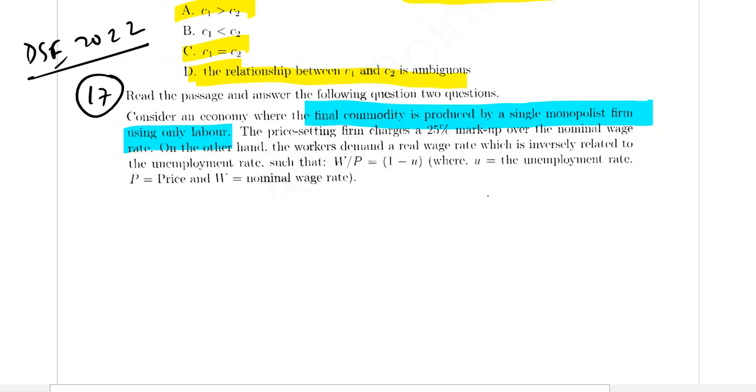The price-setting firm charges a 25% markup over the nominal wage rate. On the other hand, workers demand a real wage rate which is inversely related to the unemployment rate, such that W/P equals 1 minus U.